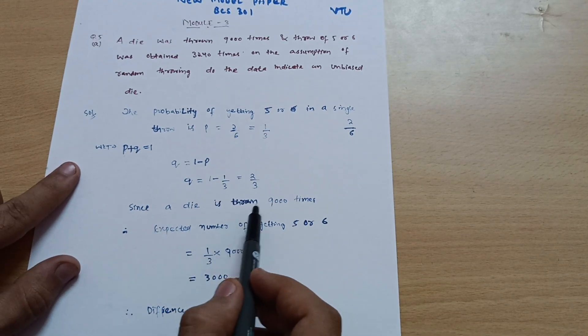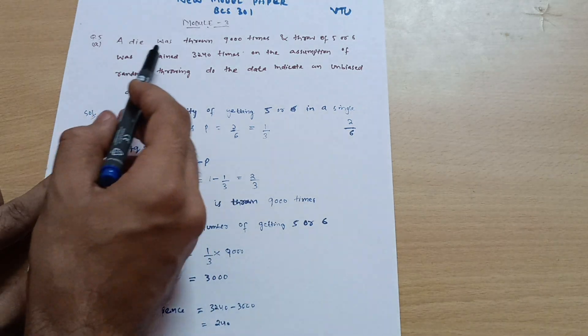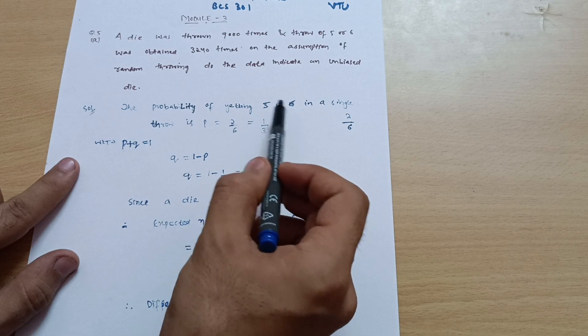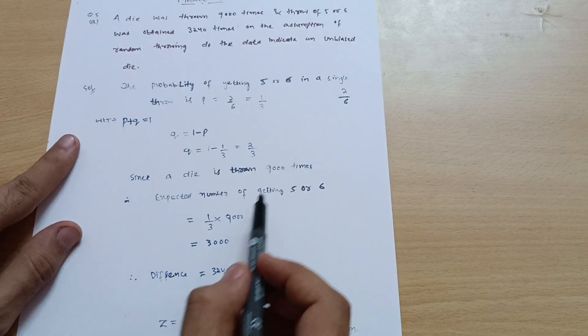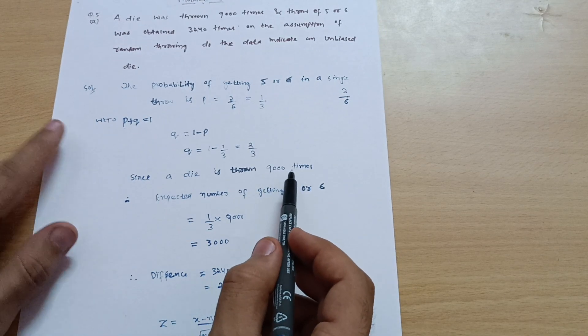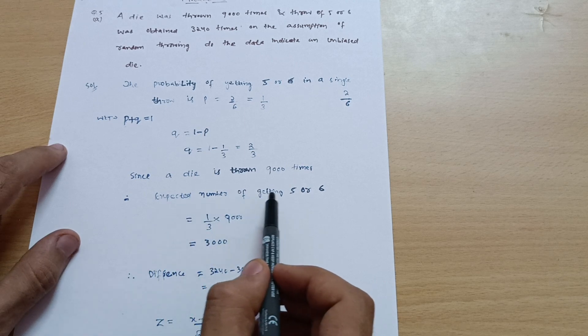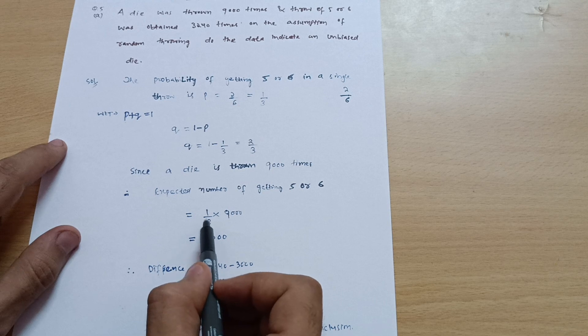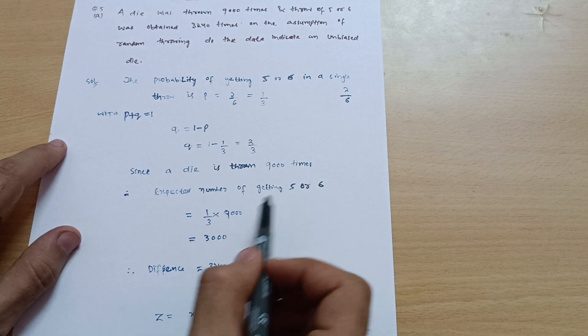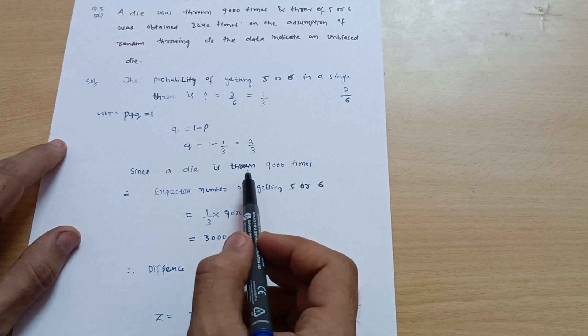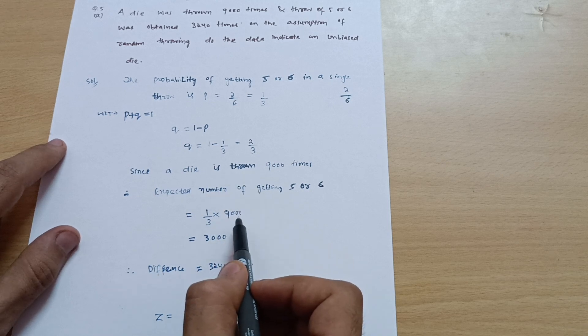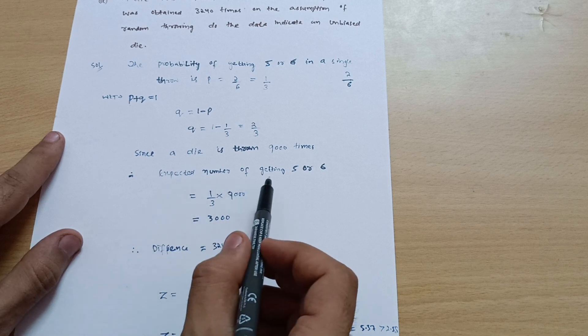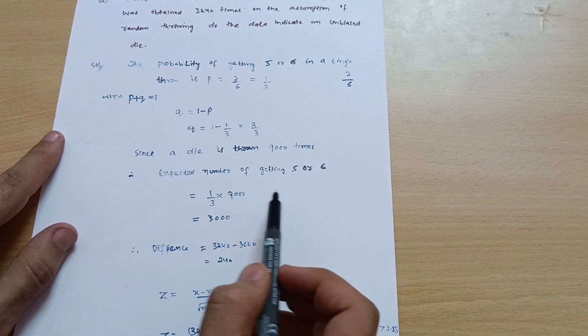Since a die is thrown nine thousand times, and we are getting the probability for these two faces as one by three, if it is thrown nine thousand times I can write the expected number of getting five or six faces equals one by three multiplied by nine thousand. When you calculate it you get three thousand.